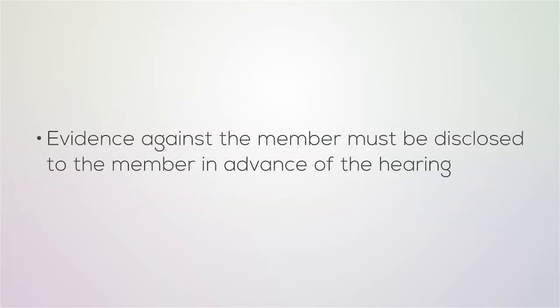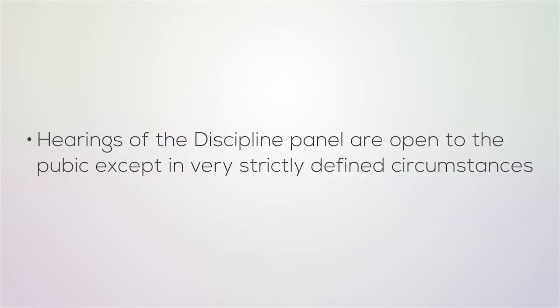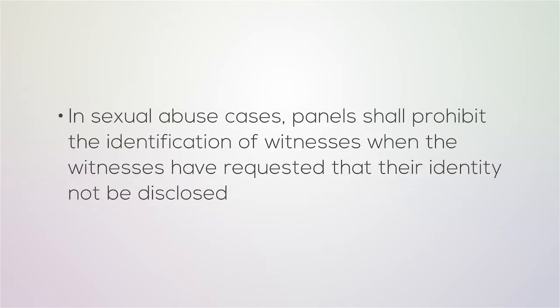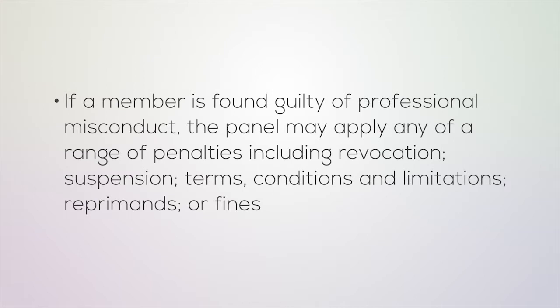Evidence against the member must be disclosed to the member in advance of the hearing. Hearings of the discipline panel are open to the public except in very strictly defined circumstances. In some circumstances, panels may decide to issue publication bans on all information disclosed in hearings. These reasons include public security, where financial or personal information may be disclosed, for safety reasons, or where the proceedings may be prejudiced. In sexual abuse cases, panels shall prohibit the identification of witnesses when the witnesses have requested that their identity not be disclosed. If a member is found guilty of professional misconduct, the panel may apply any of a range of penalties.